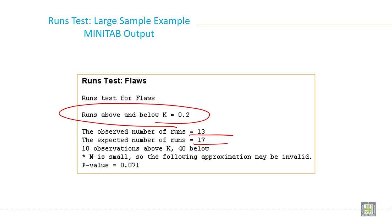10 observations above K and 40 below. N is small, so the following approximation may be invalid, and the p-value will be 0.071.